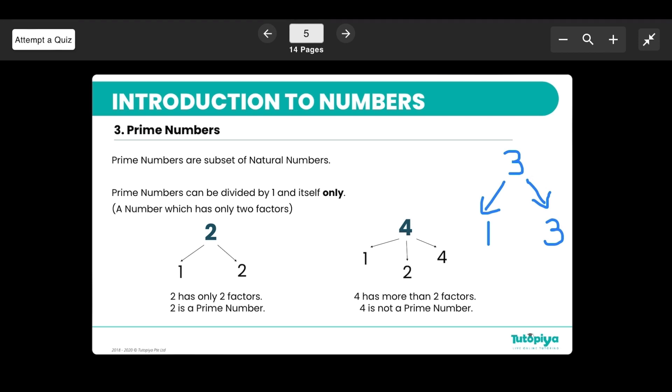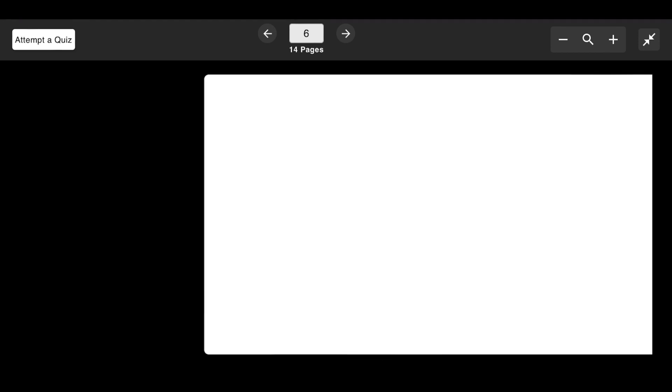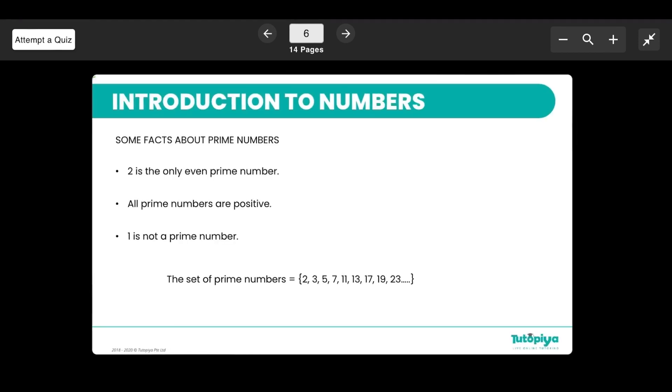So some special interesting facts about prime numbers is the fact that two is the only even prime number that we have and that all the prime numbers we talk about are positive and the important thing to remember is one is not a prime number even though the only way you can get one by one. So please remember that that's a very important fact.